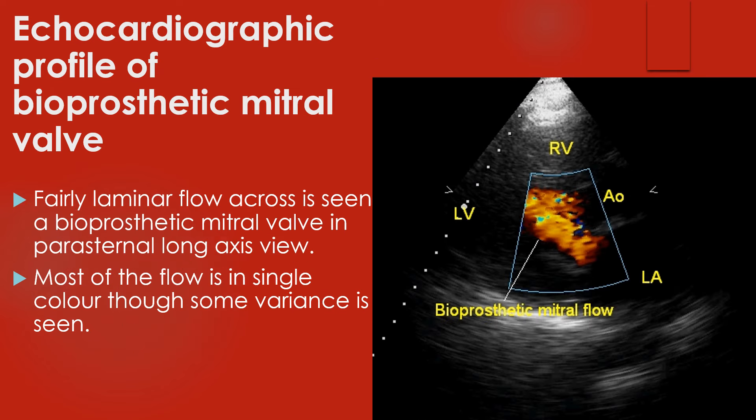Fairly laminar flow is seen across the bioprosthetic mitral valve in parasternal long axis view. Most of the flow is in a single colour, though some variance is seen. Small areas of turbulence are seen as mosaic multicoloured regions. Left atrial diameter in this view is slightly more than that of the aorta, indicating residual left atrial dilatation from the mitral valve disease.